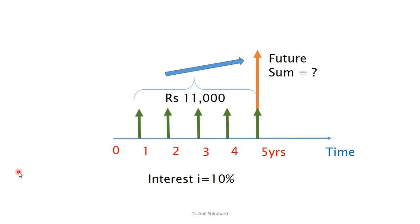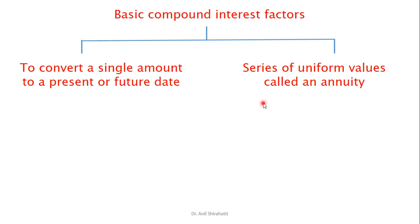There may also be a situation where instead of doing a single payment, you want to make every year some amount X — let's say 11,000 — and you want to know at the end of the 10th year, at an interest rate of 10%, what is the amount you will get. To do all this comparison analysis, we can use compound interest factors and compound interest tables.